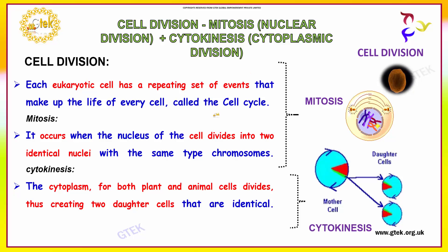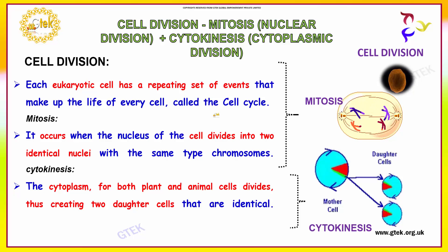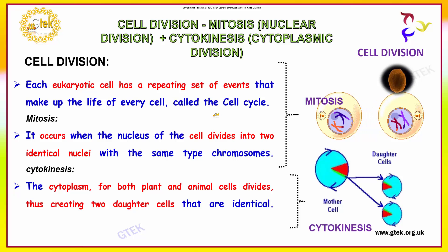Let us talk about cell division. In each eukaryote cell, there is a repeating set of events that make up the life of every cell, called the cell cycle. In the cell cycle, it is divided into two types: mitosis and cytokinesis. Mitosis occurs when the nucleus of the cell divides into two identical nuclei with the same type of chromosomes.